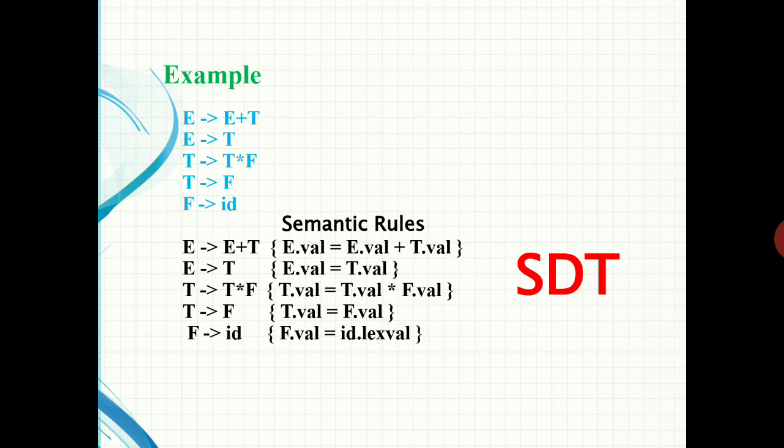In each production we associate some informal notations. For example: E → E + T has the semantic rule { E.val = E.val + T.val }. Similarly, E → T gives { E.val = T.val }, T → T * F gives { T.val = T.val * F.val }, T → F gives { T.val = F.val }, and F → id gives { F.val = id.lexval }.